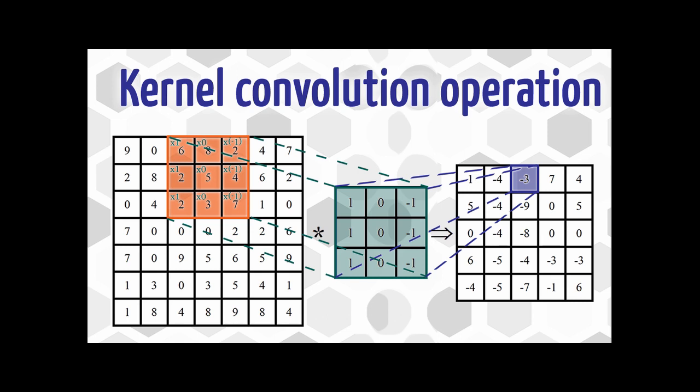The outcome of kernel convolution operation is a feature map. To detect higher level patterns, we need to use multiple convolutional and pooling layers.